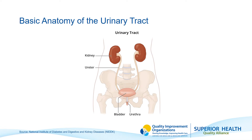The urinary tract is responsible for the production, storage, and passing of urine. It includes the kidneys, the ureters, the bladder, and the urethra. The two kidneys lie at the back of the abdomen beneath your 12th and 13th rib. They produce urine by filtering unwanted substances from the blood. The urine produced passes out of the kidneys, down both ureters, and into the bladder where it is stored.